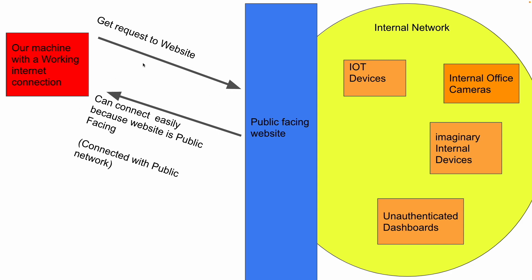SSRF, or server-side request forgery, is a critical security vulnerability that allows an attacker to manipulate a server into making requests to internal resources. This can lead to data leaks, unauthorized access, and oftentimes complete system compromise. In this video we'll explore different types of SSRF attacks and demonstrate various testing techniques.